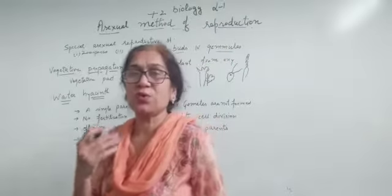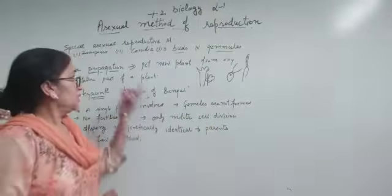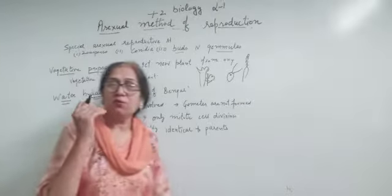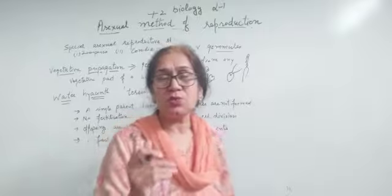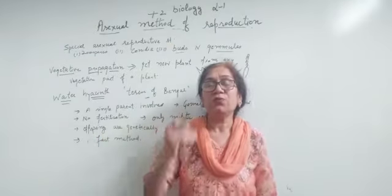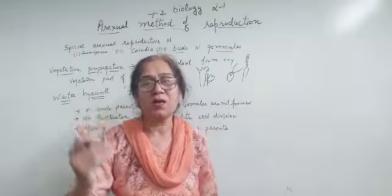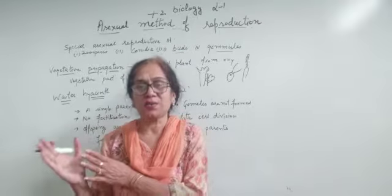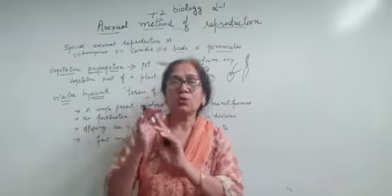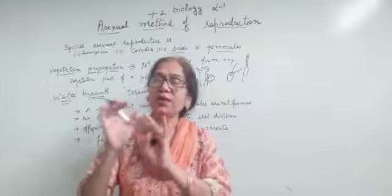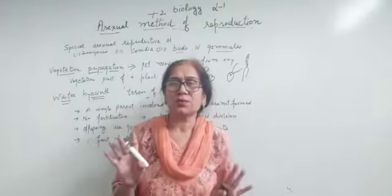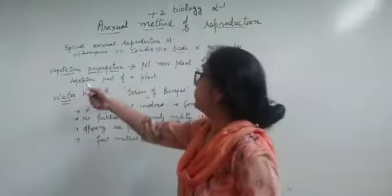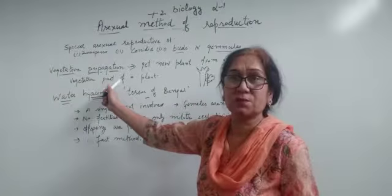After that, next is vegetative propagation. What is vegetative propagation? Vegetative propagation means to get the new plant from any vegetative part of the plant. Aap plant ki kisi bhi vegetative parts hai. Means, flower ko chhod do. Roots, stem, leaves, or any other part, koi bhi part use kar sakte which is vegetative. And get the new plant, we call it vegetative propagation.